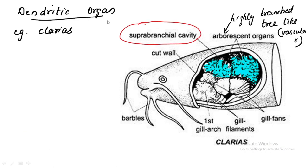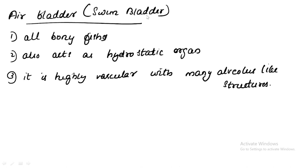The dendritic organ is found in Clarius. Here also, the accessory respiratory organ is in the form of a highly branched tree-like structure developed in the suprabranchial cavity. The suprabranchial cavity is a cavity that grows outside the gill chamber. This structure is also highly vascular. Air enters through the mouth, reaches this organ where gas exchange takes place, and used air is expelled out through the opercular opening.